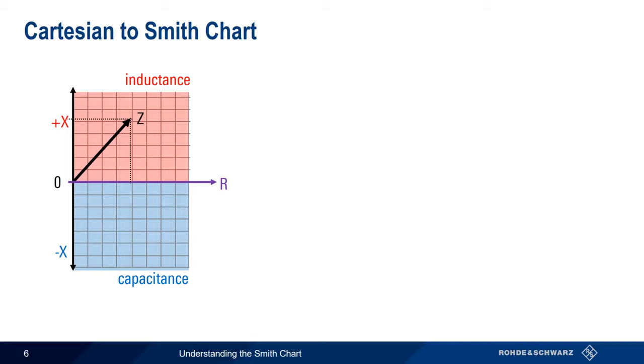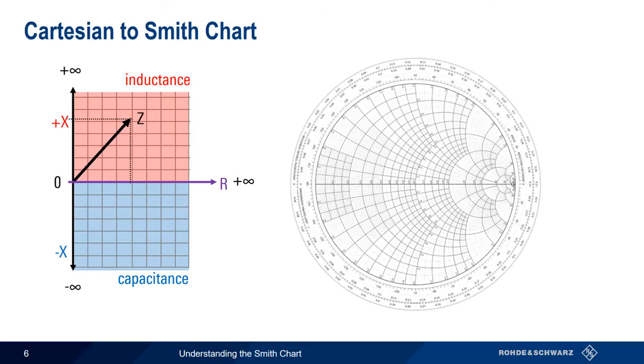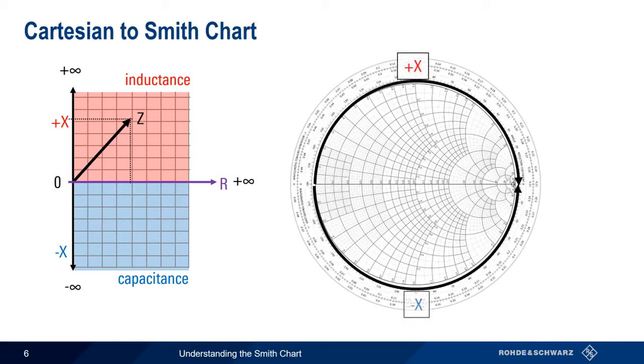More importantly, both the impedance and resistance can range from zero to infinity. The Smith Chart essentially bends the right half of our Cartesian coordinate plane, such that the positive and negative reactance axes are curved around to meet the resistance axis.